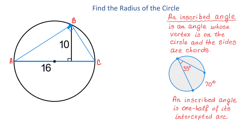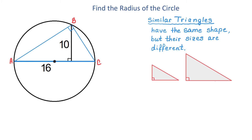Now, this line segment that measures 10 units represents the height of this triangle. The height splits this triangle into two smaller triangles, and these triangles are similar. Similar triangles are triangles that have the same shape, but their sizes are different.